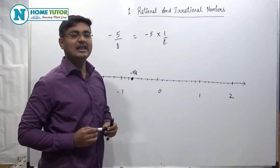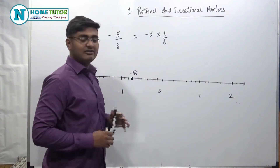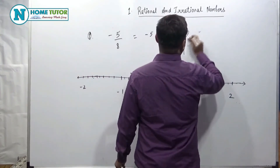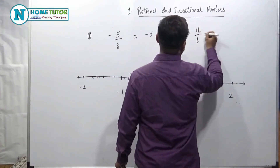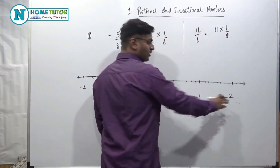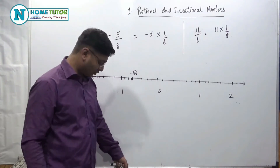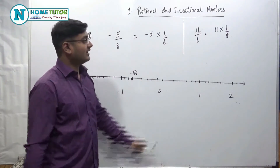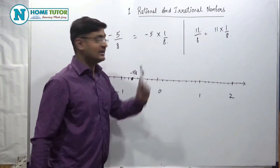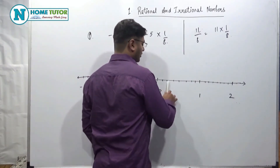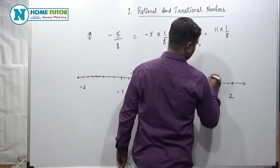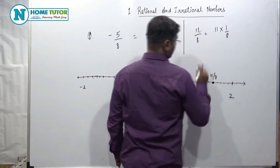The next question is to plot 11 by 8. We write 11 by 8 as 11 into 1 by 8, so we divide each unit into 8 equal parts. Now let's find the 11th point on the right side — because it is positive. The 11th point: 1, 2, 3, 4, 5, 6, 7, 8, 9, 10, 11. So this point is 11 by 8.